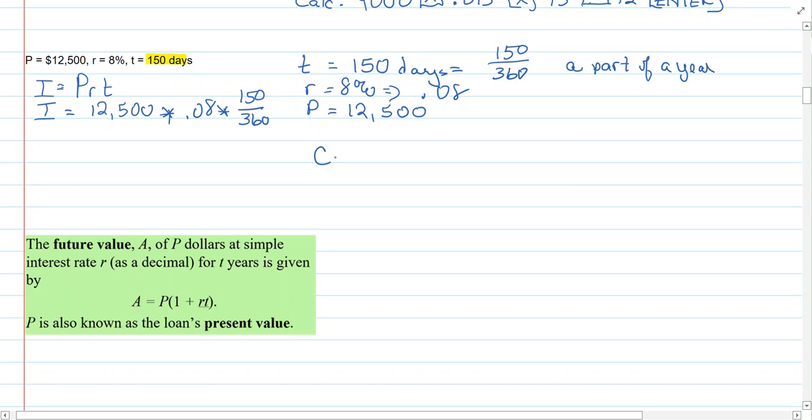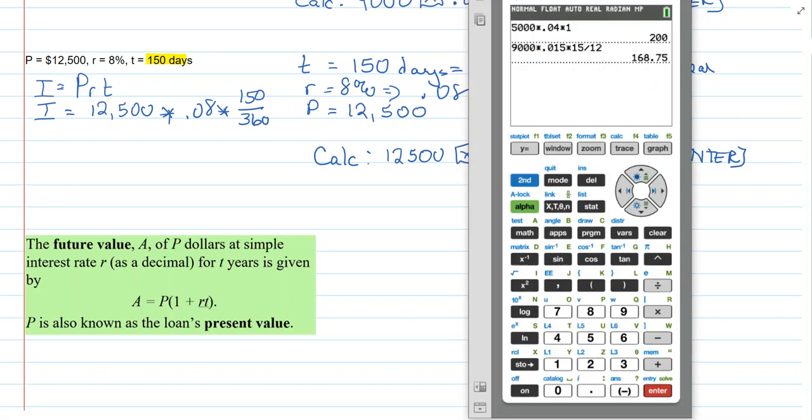We're going to use our calculator. Our entry is going to be the values that we wrote just the way we wrote them, except we're going to do our fraction as 150 divided by 360 and then we'll enter. So we do the 12,500 times the decimal 0.08 times the 150 days divided by the 360. Businesses do simple interest loans and here's our first exposure to a long repeating decimal.